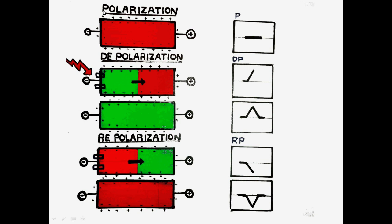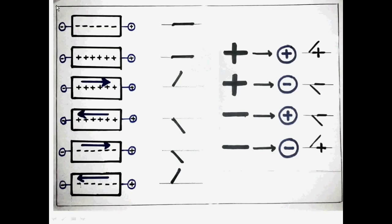Here we have one cell with one end connected to the positive terminal and another to the negative terminal. Inside the cell is full of negative ions, but as these negative ions are not moving either way, in the ECG recordings we get a simple flat line. It does not matter whether the cell is filled with positive or negative ions — if there is no motion of ions, there is no electrical activity, so we get a simple flat line.